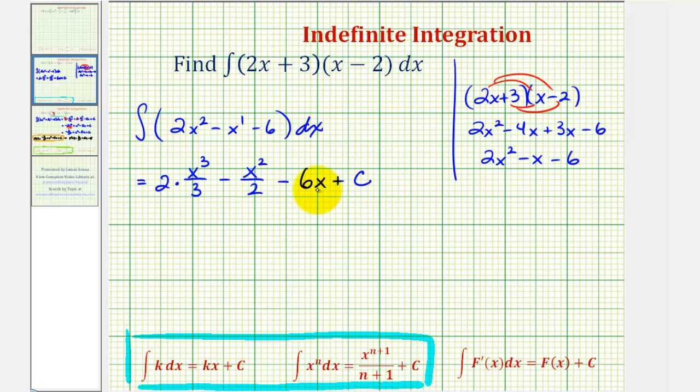Let's go ahead and simplify this. We would have two-thirds x to the third. I'm going to write this as minus one-half x to the second minus six x plus C, and normally we use big F of x to represent the antiderivative, so we can say big F of x is equal to two-thirds x to the third minus one-half x squared minus six x plus C.